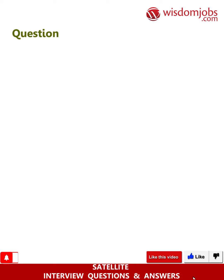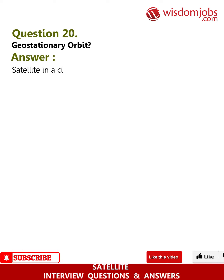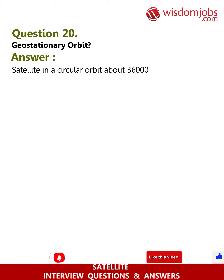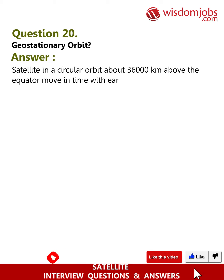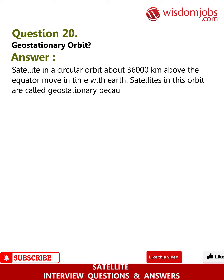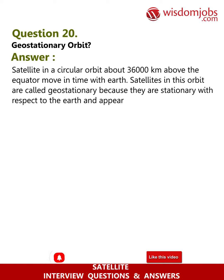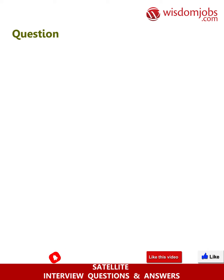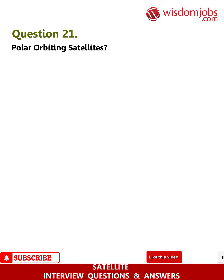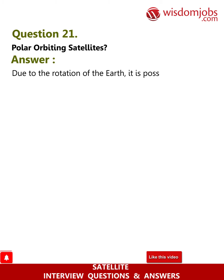Question 20: Geostationary orbit. Satellites in a circular orbit about 36,000 km above the equator move in time with the earth. Satellites in this orbit are called geostationary because they are stationary with respect to the earth and appear to be fixed in the sky.